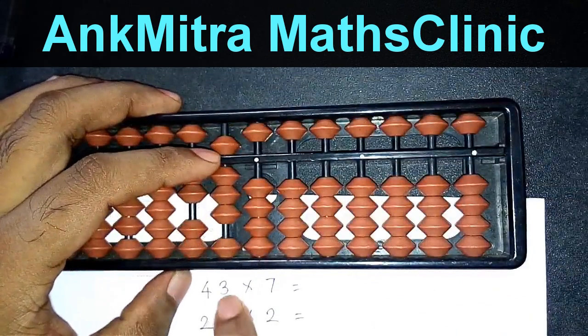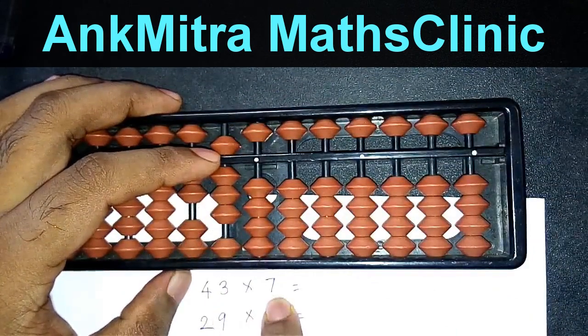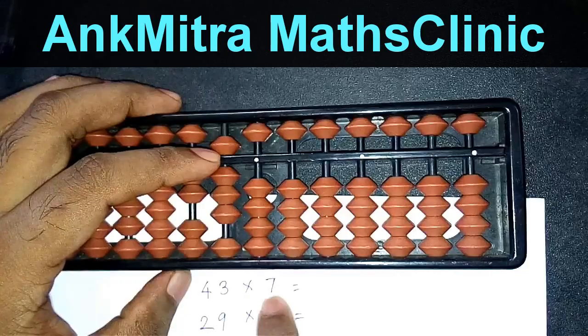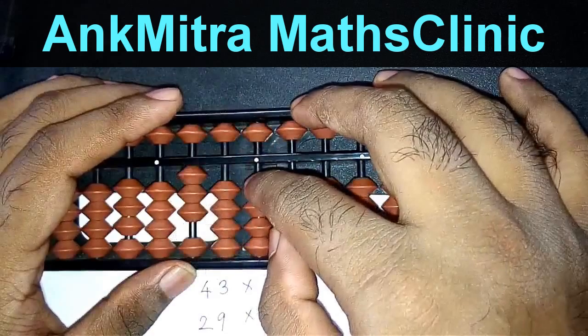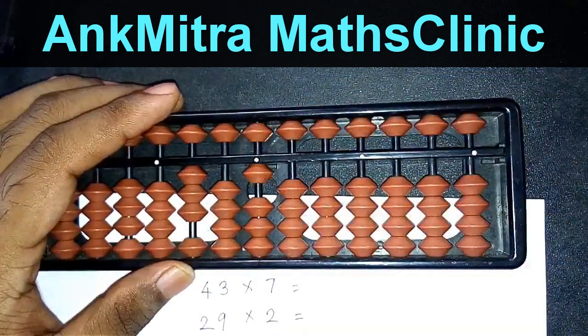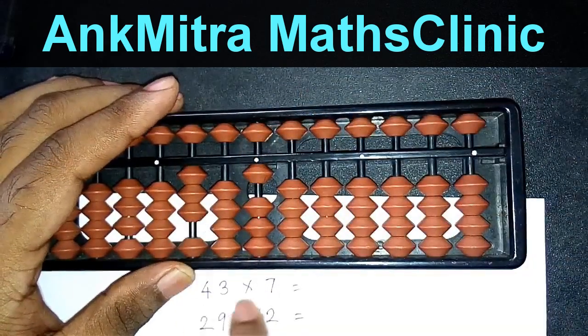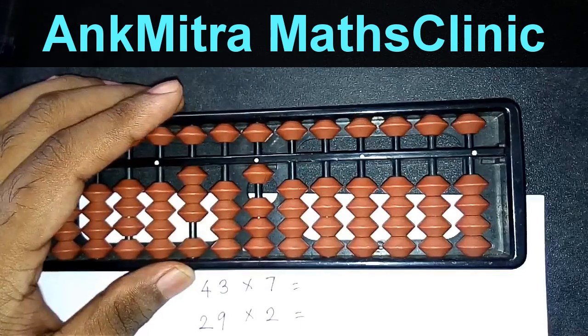Then I'll come to the second rod and I'll do 3 sevens are 21. So this 21 will be added from the second rod. So adding 2 here, I'll do minus 8 plus 10, and 1 on the units place directly. So the answer that we have for 43 multiplied by 7 is 301.